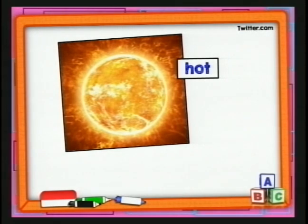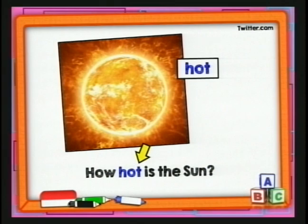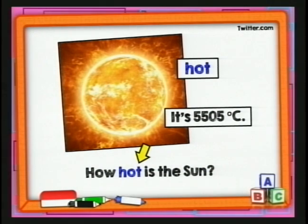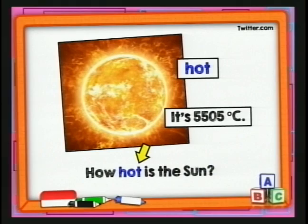Ya vimos qué tan fría es la luna. Ahora vamos a ver qué tan caliente es el sol. El adjetivo es 'hot', que quiere decir caliente. 'How hot is the sun? It's 5,505 degrees Celsius.' Súper, súper caliente — 5,505 grados centígrados. Y eso que solo estábamos hablando de la superficie; los científicos dicen que dentro del sol es incluso más caliente. So how hot is the sun? It's very, very hot.